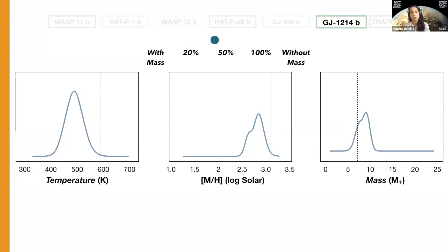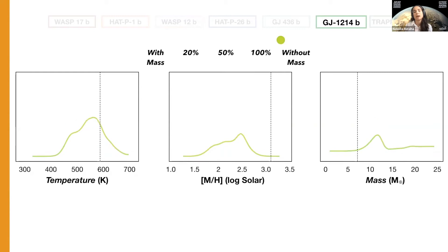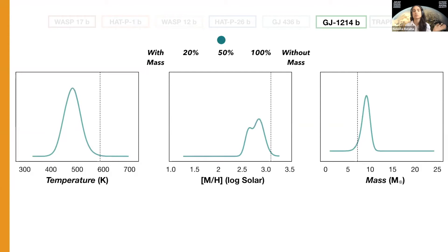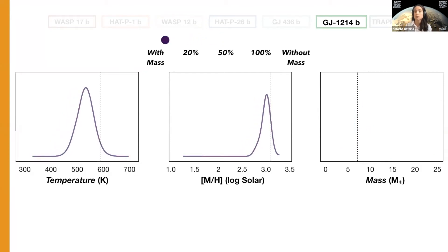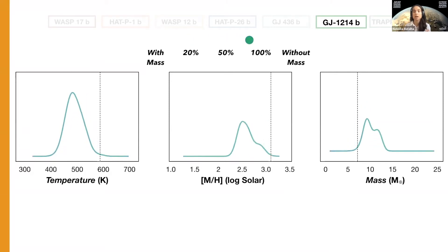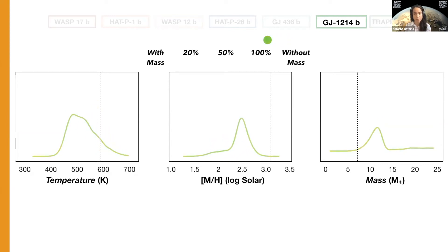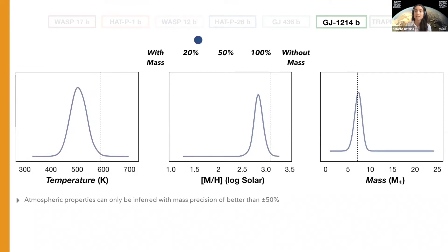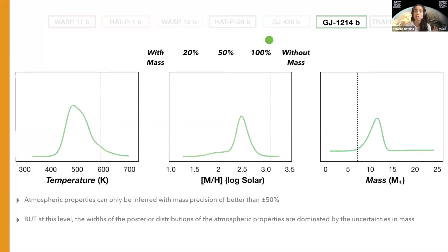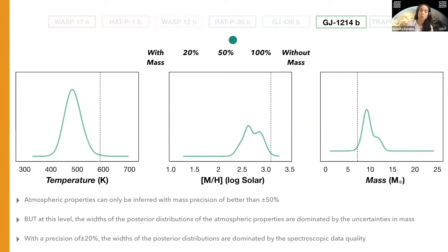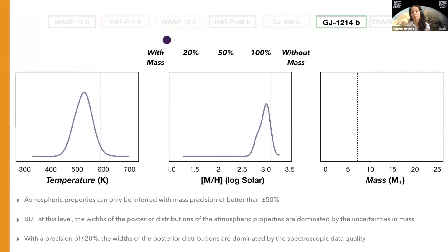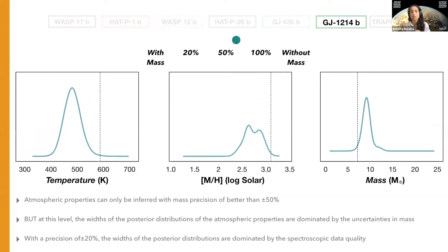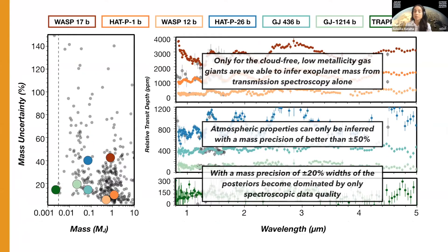Next I'll skip to the case of GJ 1214 b, which is the famously flat planet, thought to have relatively high metallicity and a high cloud deck — exemplifying what happens on the other end of the spectrum. For this case, as the precision on mass degrades, the posteriors of metallicity and temperature drastically lose both precision and accuracy. The atmospheric properties can only be inferred with a mass precision of better than 50 percent, but even then the posterior distributions are dominated by uncertainties in mass. If you improve your mass to 20 percent, the posteriors finally become dominated purely by the spectroscopy data quality alone. So ultimately we need at least 50 percent masses for initial characterization, but we should really aim for 20 percent.